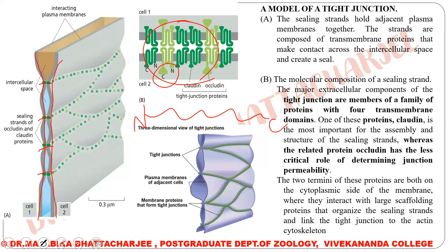To explain this picture: this is cell 1 and this is the other cell. From cell 1, you can see the claudin and the occludin protruding out, and from cell 2 also you can see the claudin and occludin protruding out. The N and C-terminals of both proteins are cytoplasmic in nature for both cells. This is the molecular composition of the tight junction.